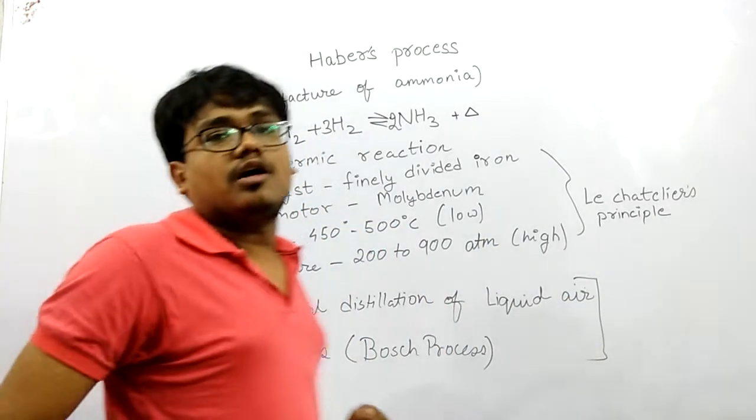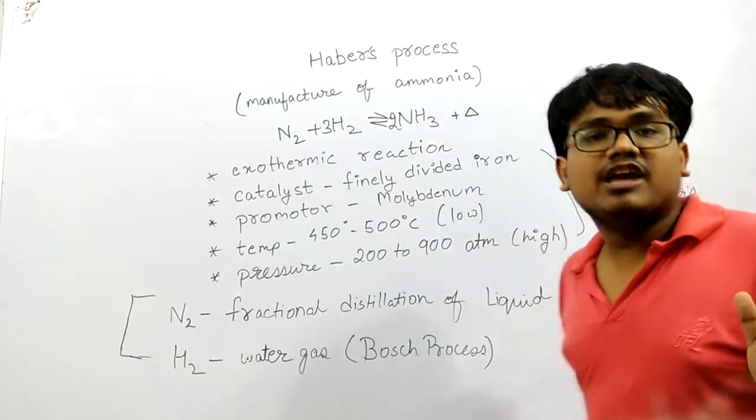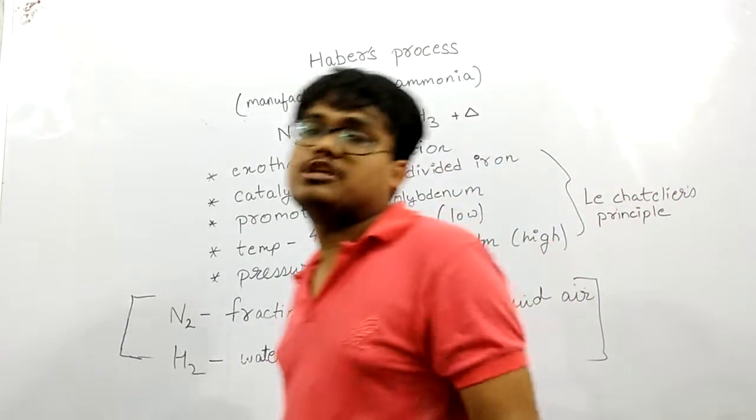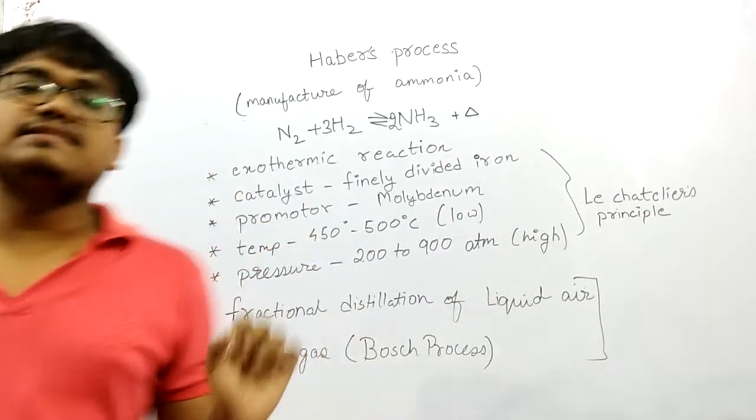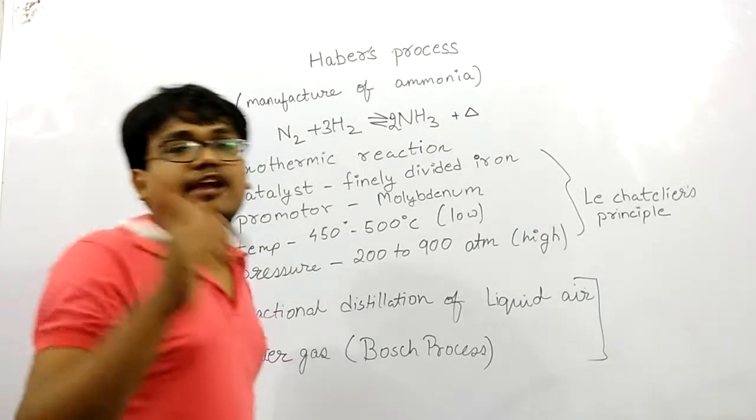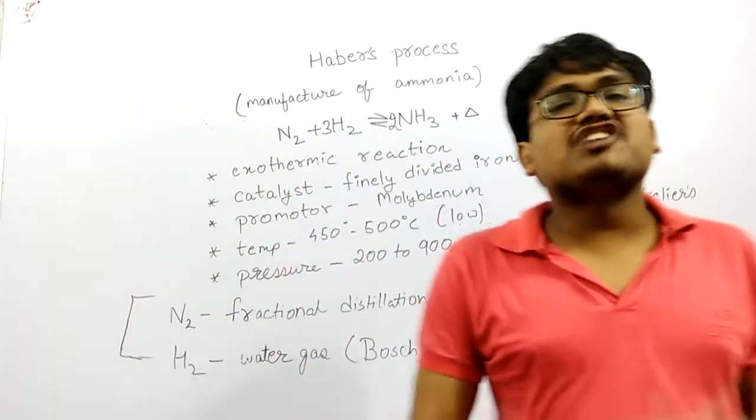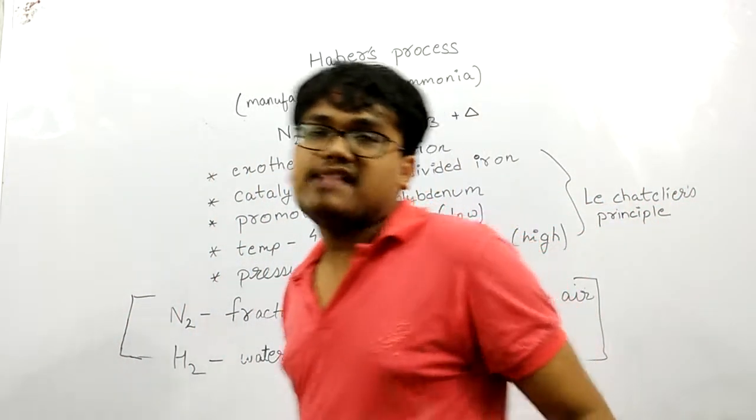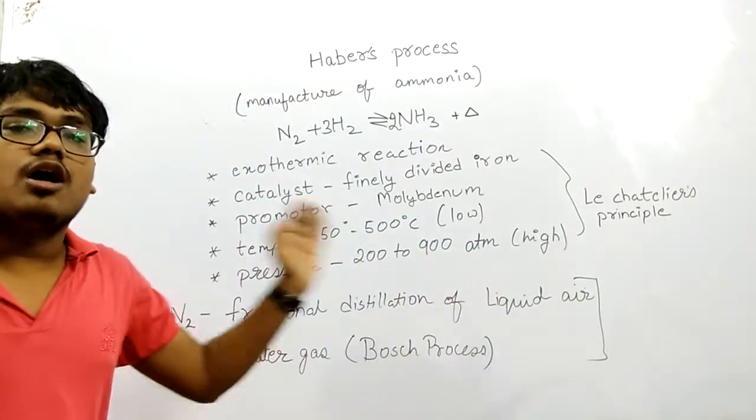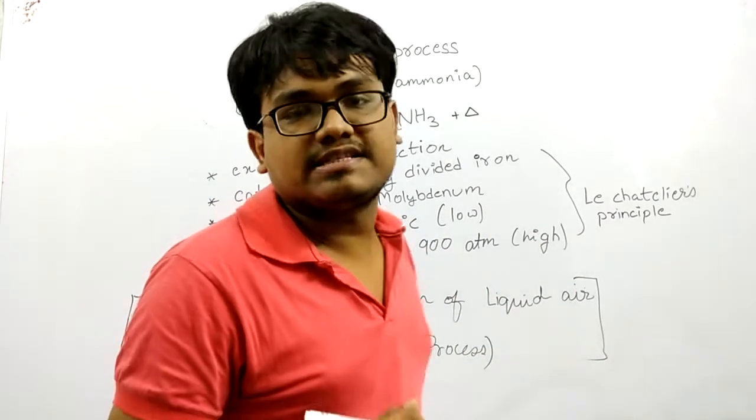Now the reactants we are using are nitrogen and hydrogen. Nitrogen we get from fractional distillation of liquid air, and hydrogen we get from water gas, that is the Bosch process.